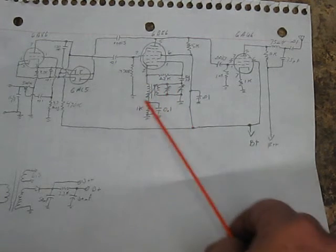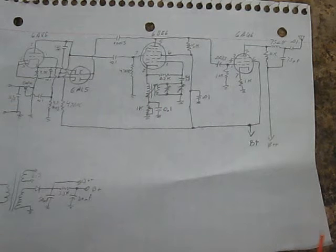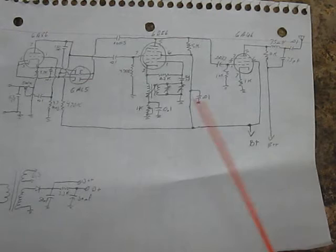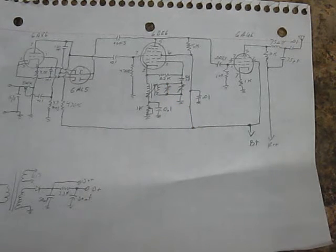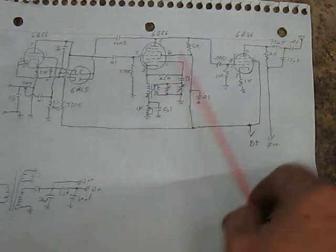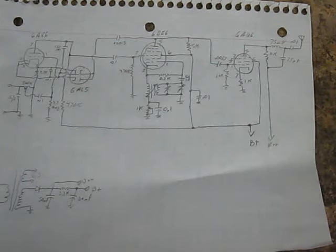I had a transformer, so I opted to go that route. But you could actually series string it and go transform-less if you wanted to. We have an oscillator coil here, which basically is out of an all American 5, which will work just fine.